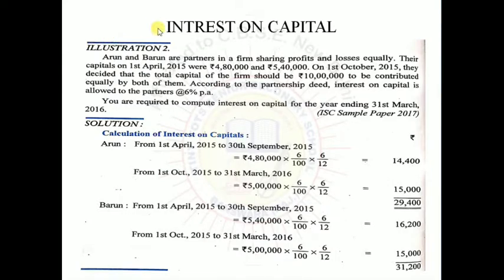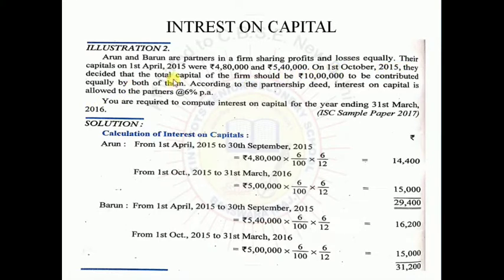Now let's look at a small question on interest on capital. Arun and Barun are partners in a firm sharing profits and losses equally (1:1). Their capitals on 1st April 2015 were Rs.4,80,000 and Rs.5,40,000 respectively. On 1st October 2015 they decided that total capital of the firm should be Rs.10,00,000 contributed equally by both. Interest on capital is allowed at 6% per annum.